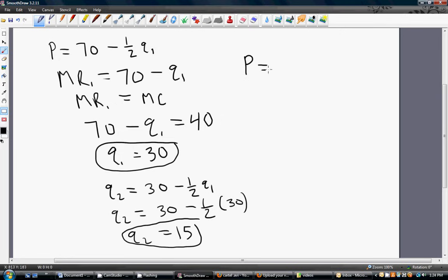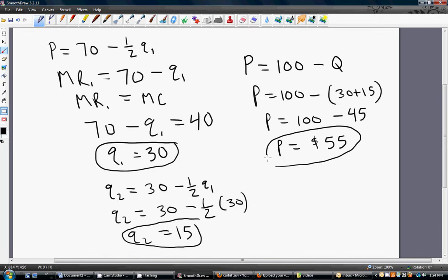The next thing here, let's get the going market price. So price equals 100 minus total industry output of 30 plus 15, or $55. And that is how you do a Stackelberg problem.